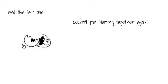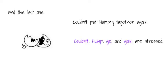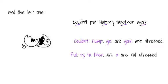And the last one: couldn't put Humpty together again. 'Couldn't,' 'Hump,' 'g,' and 'gain' are stressed. 'Put,' 't,' 'to,' 'there,' and 'a' are not stressed. Couldn't put Humpty together again.